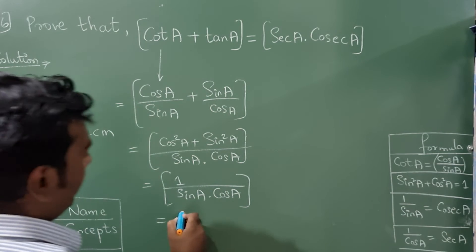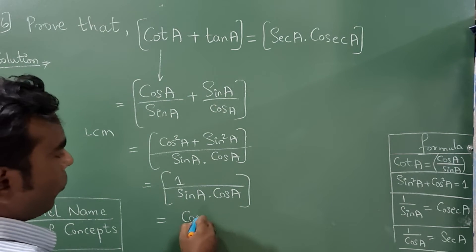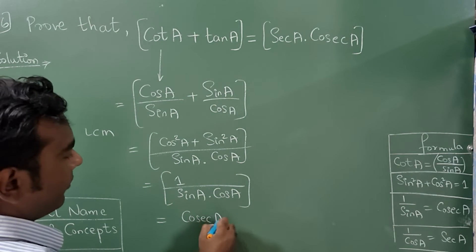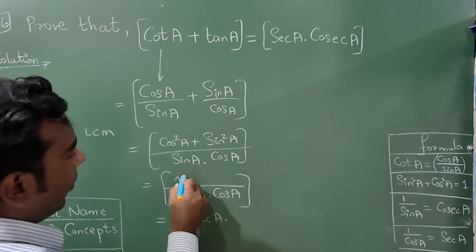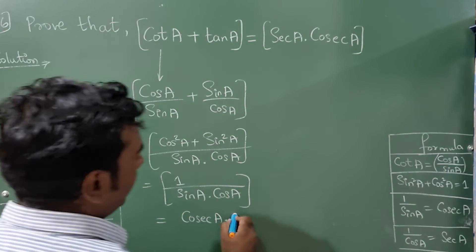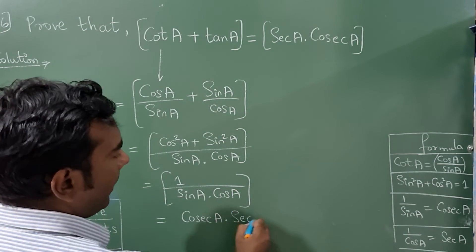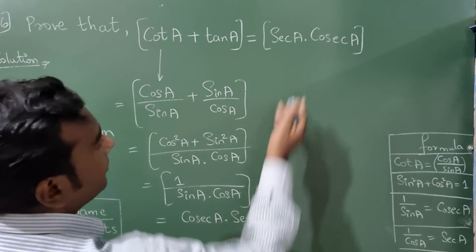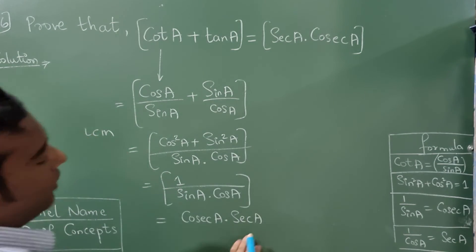One by sin A is cosec A, and one by cos A is sec A. This proves the identity: cot A plus tan A equals sec A into cosec A.